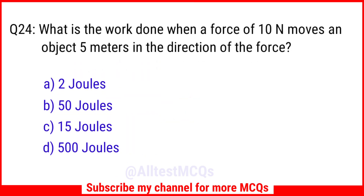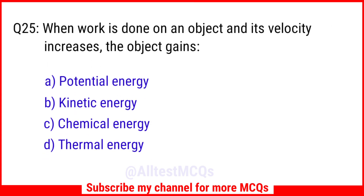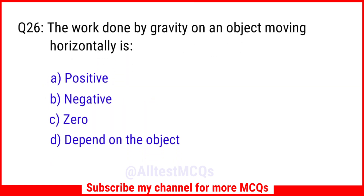Question No. 24: What is the work done when a force of 10 Newtons moves an object 5 meters in the direction of the force? The right answer is Option B: 50 joules. Question No. 25: When work is done on an object and its velocity increases, the object gains? The right answer is Option B: Kinetic energy.